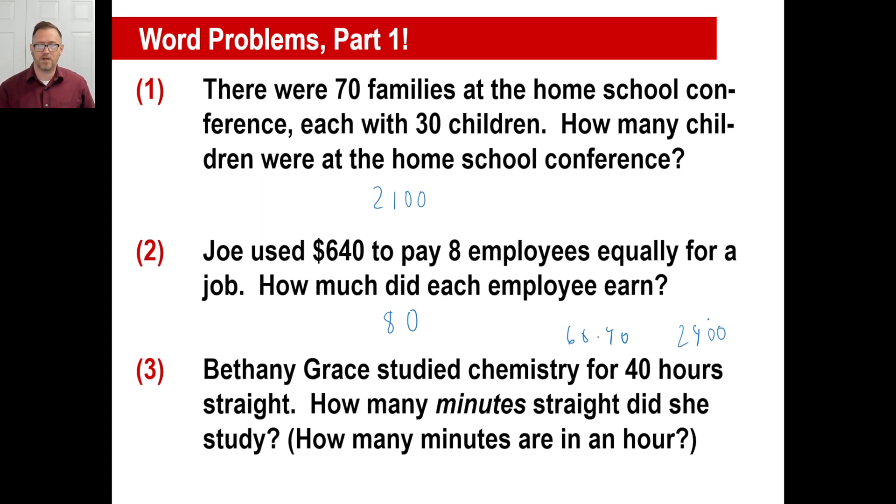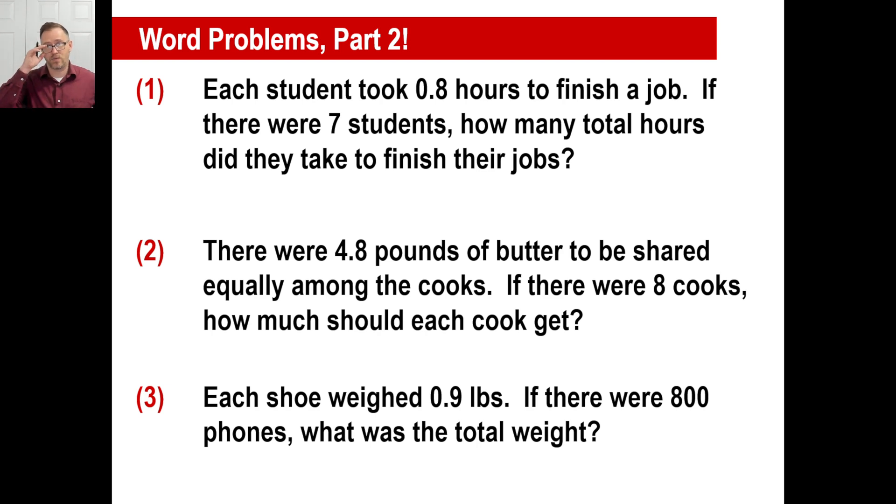Pause this one. Try all three of those and see what you get. Okay. You're back. Seven students. They all took 0.8 hours to finish a job. How many total hours did they work? We're going to estimate. That's the first thing we were messing with, decimals and zeros. So seven times about one is about seven. Now ignore the zero and decimal. Seven times eight is 56. That's not close to seven. That's close to seven. There we go.